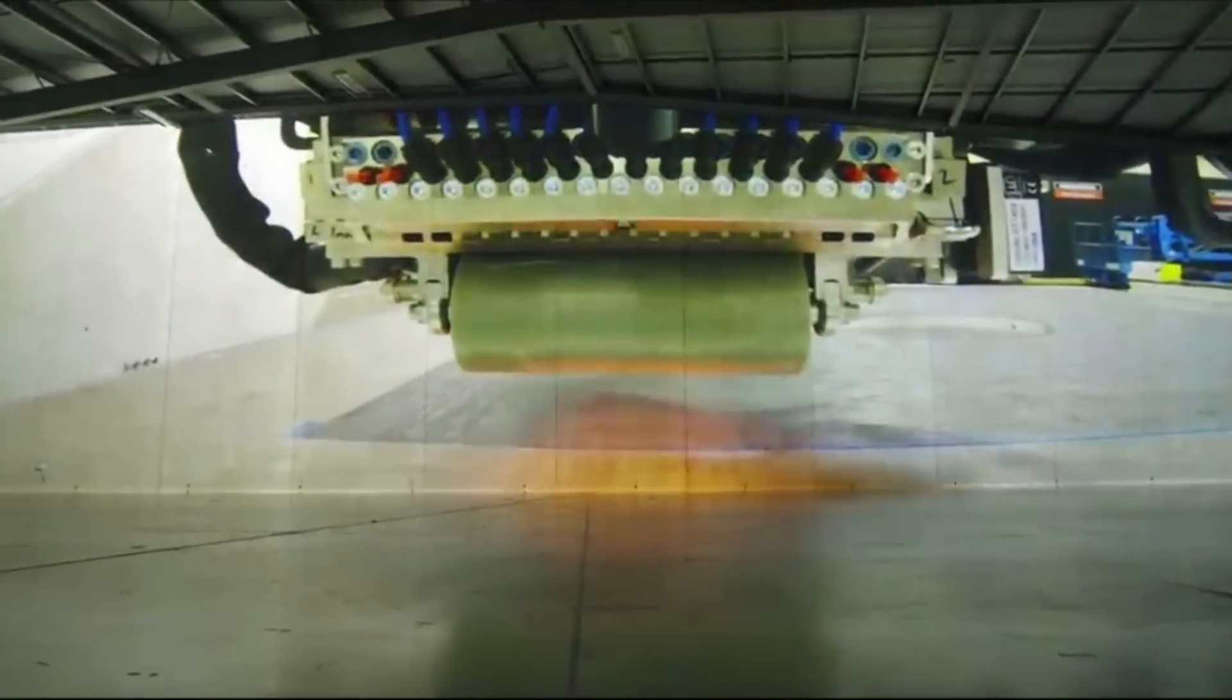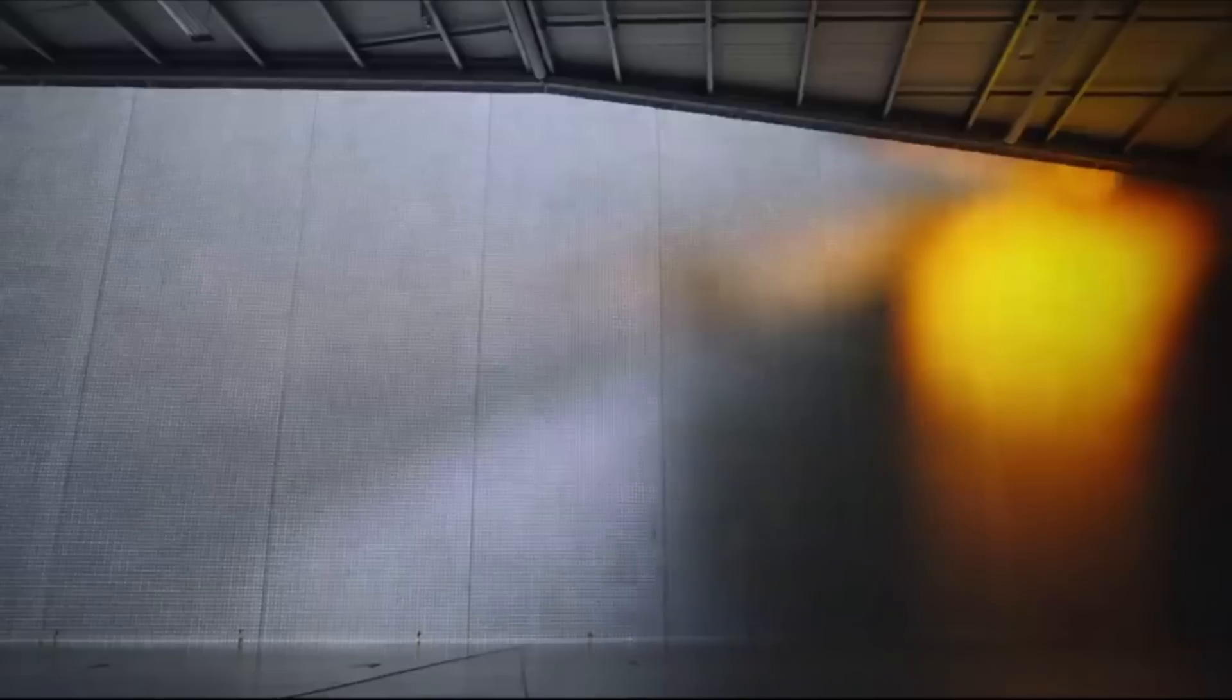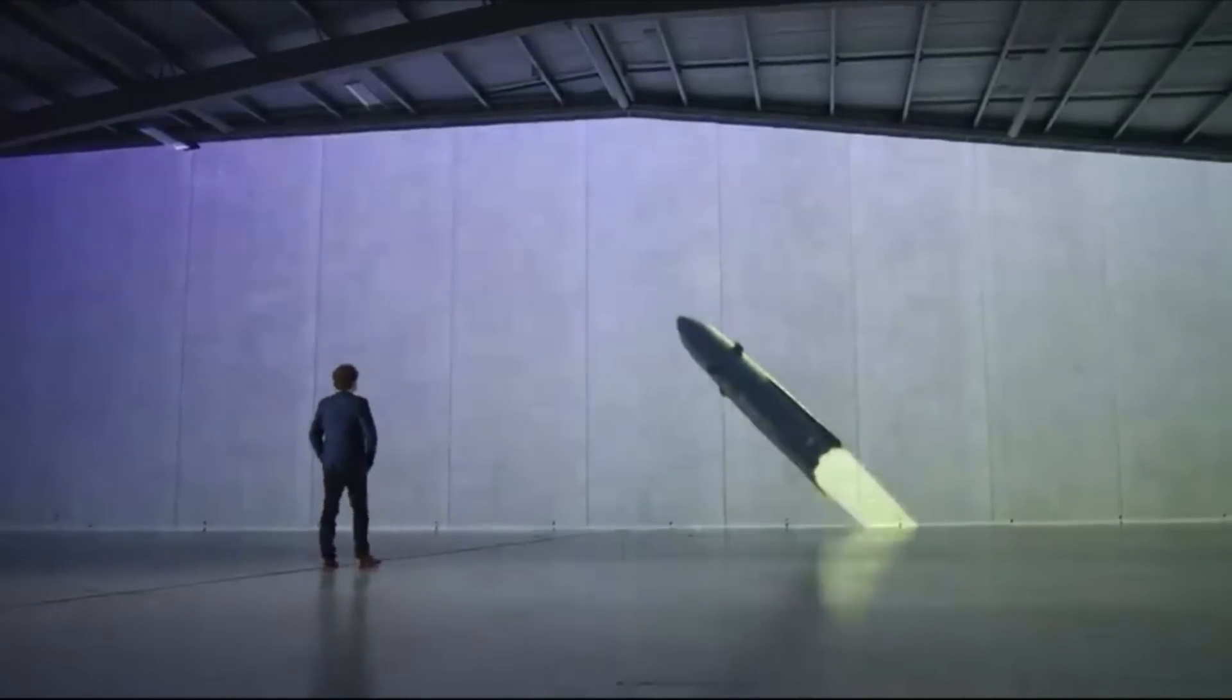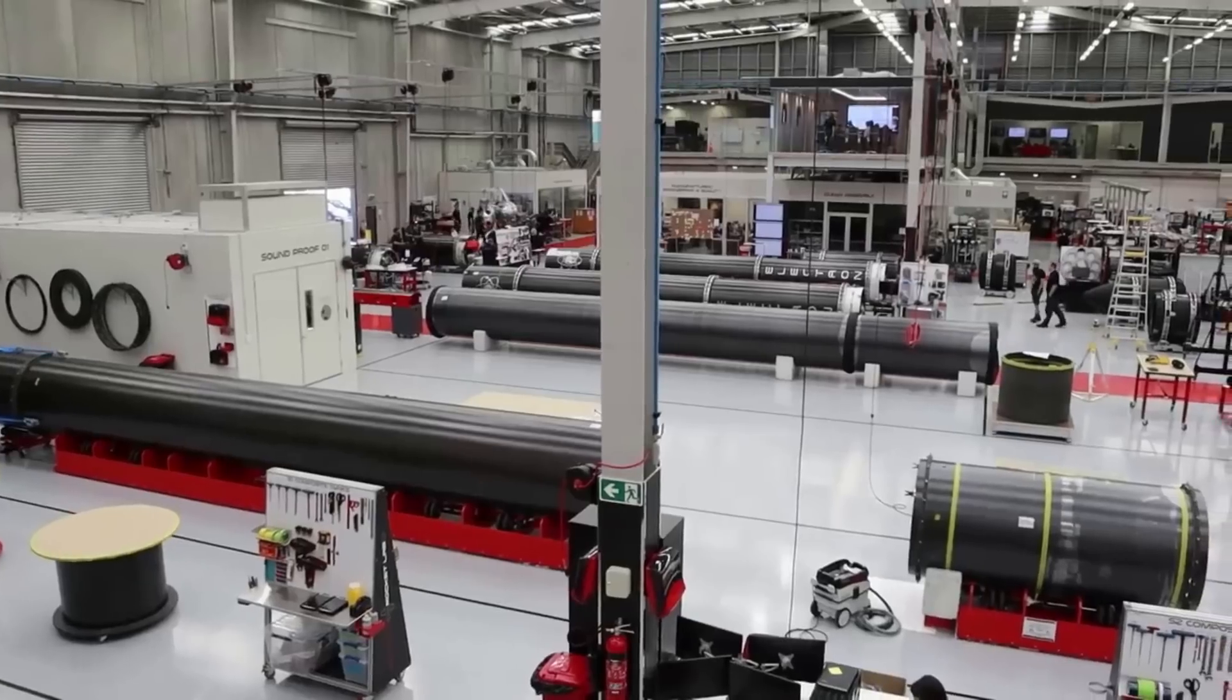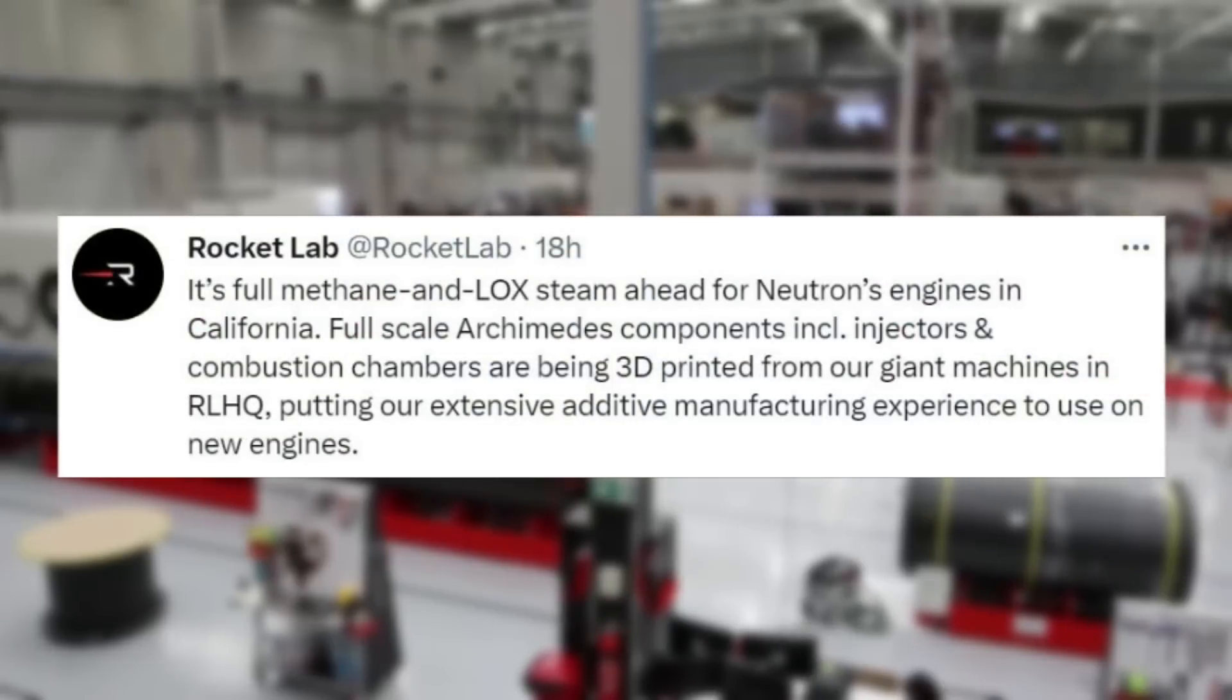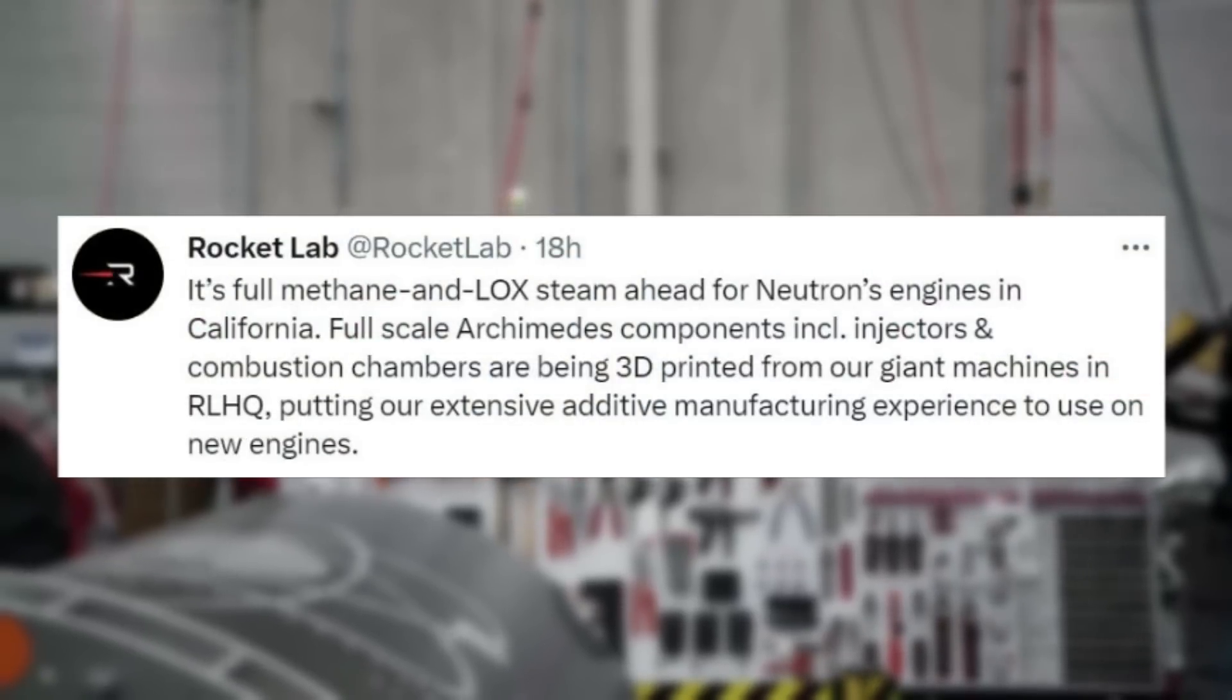For months now, Rocket Lab has been working to manufacture and test the hardware necessary to put together a next generation rocket engine. Yesterday the company tweeted saying, it's full methane and locked steam ahead for Neutron's engines in California.